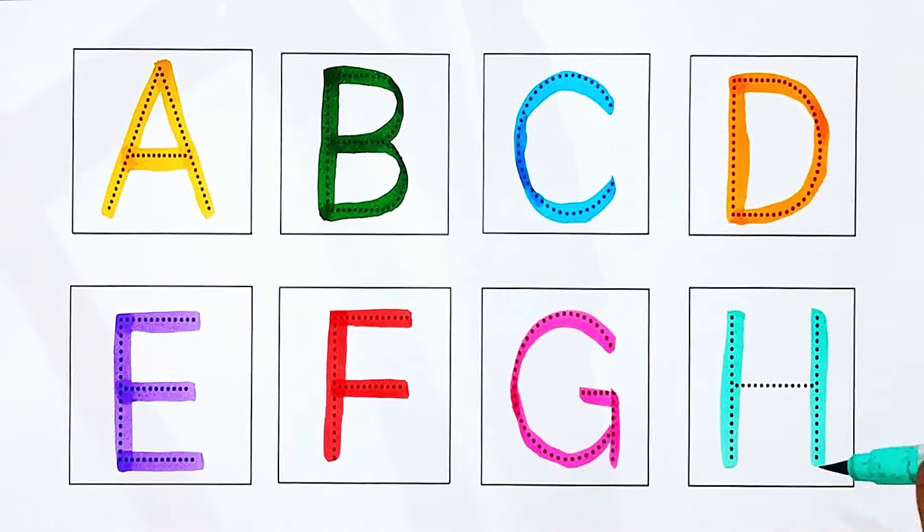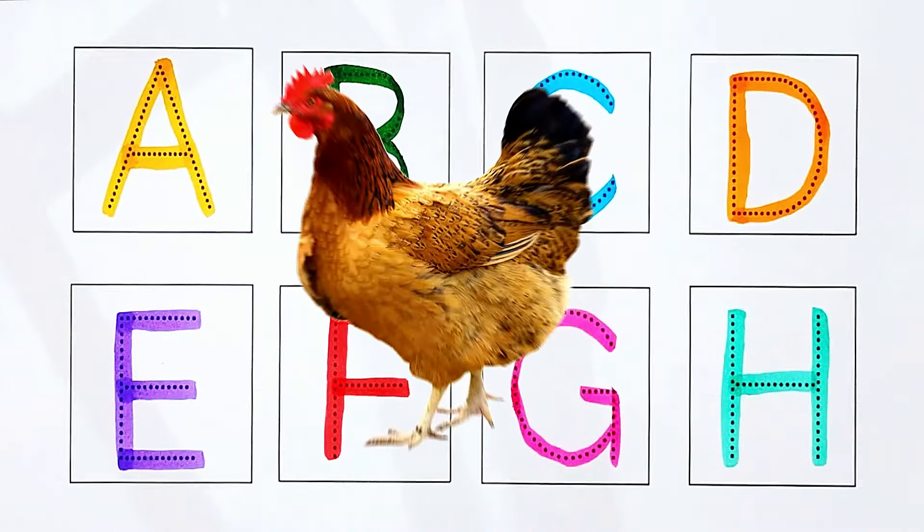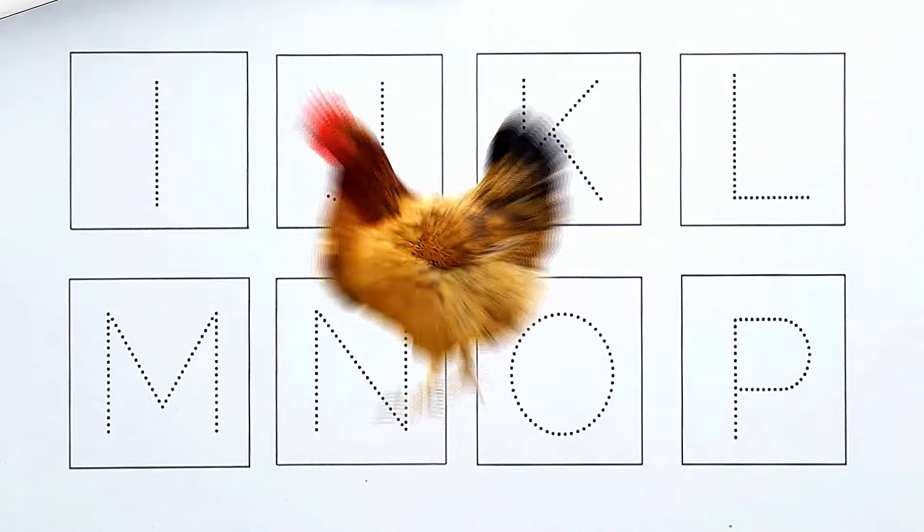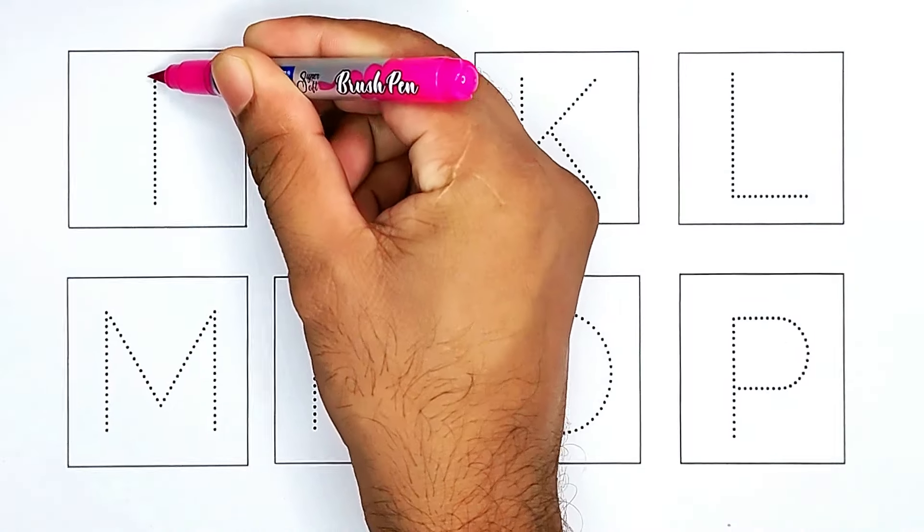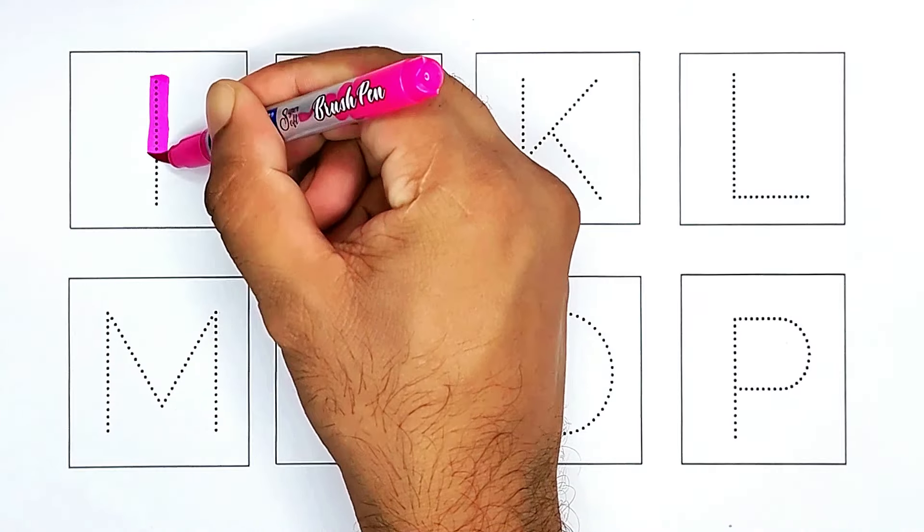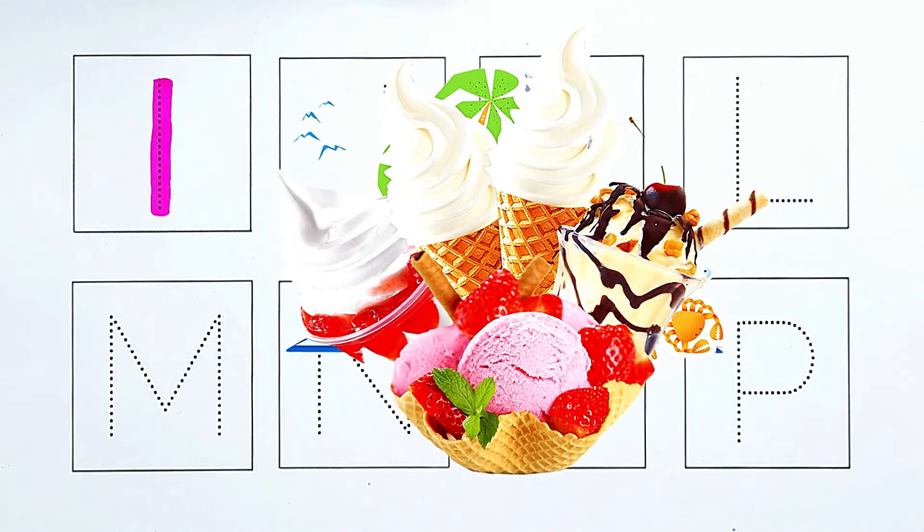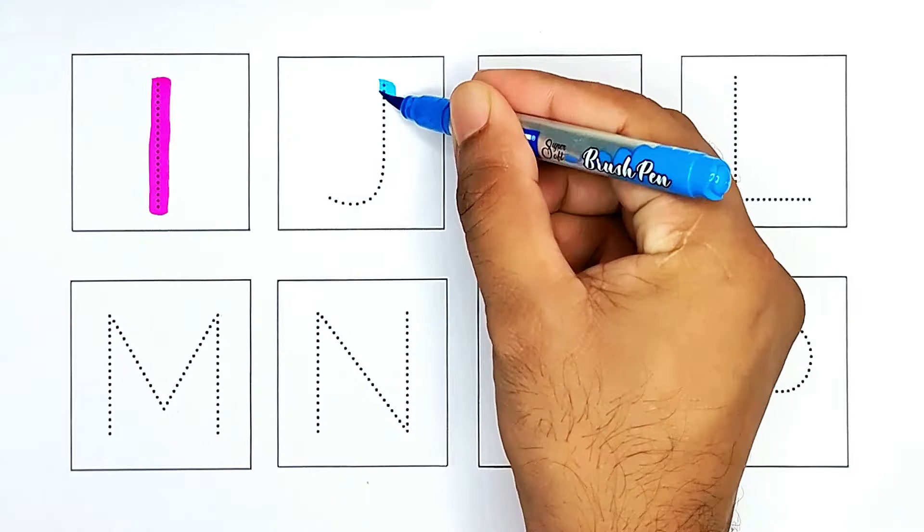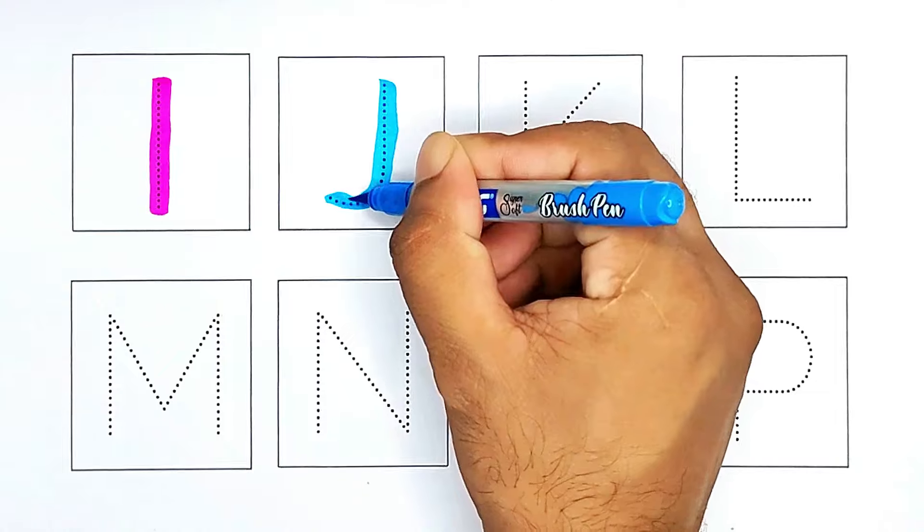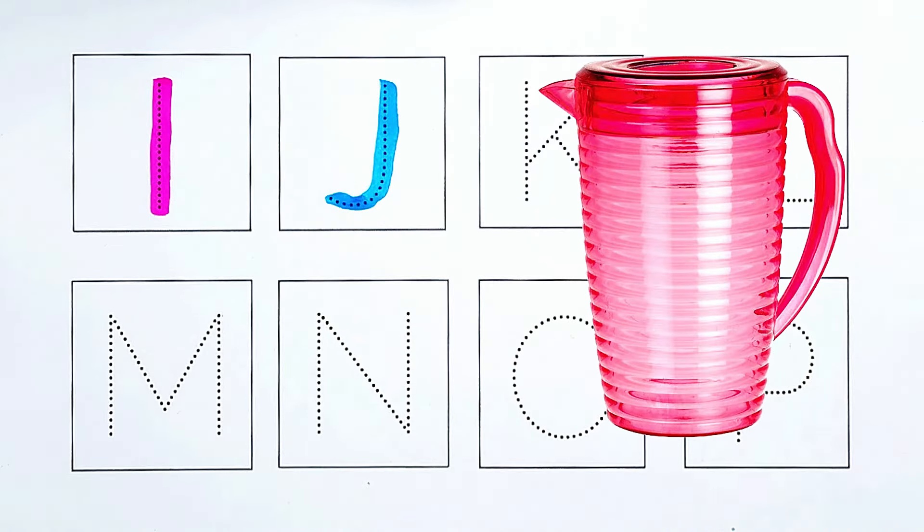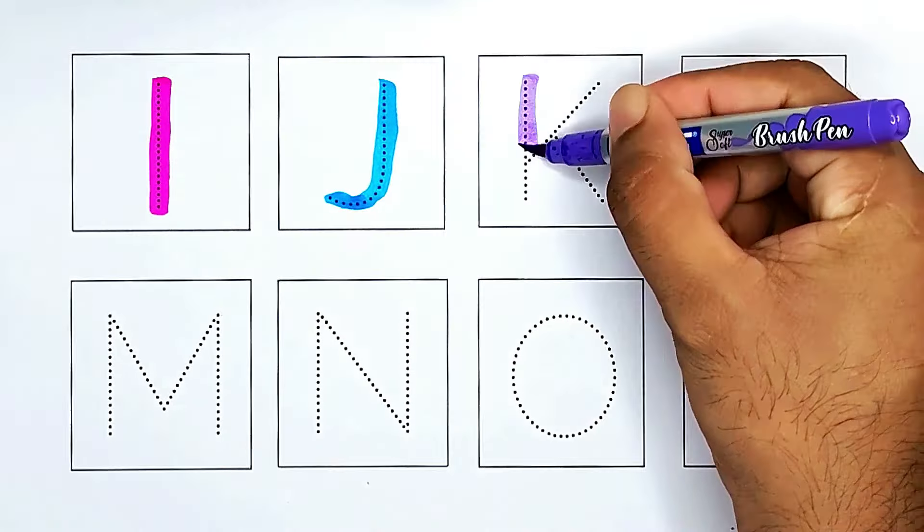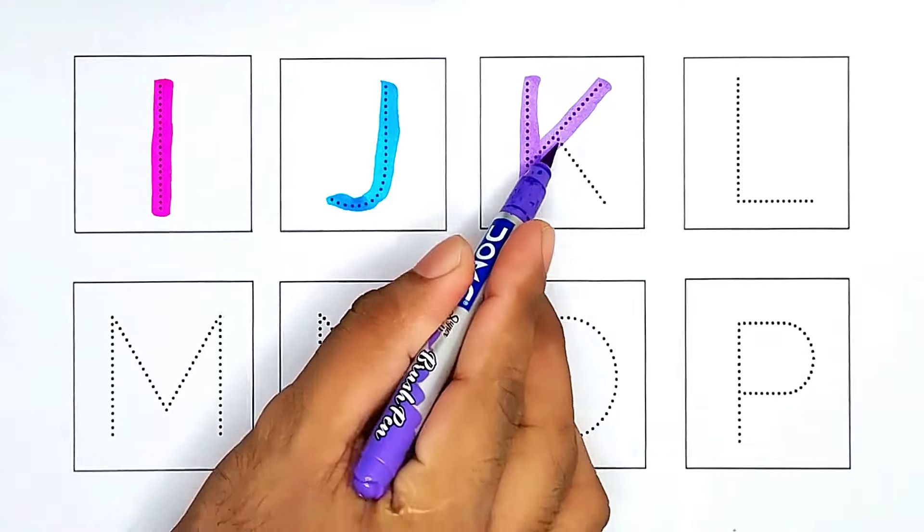H, H for hen. I, I for ice cream. J, J for jug. K, K for kite.